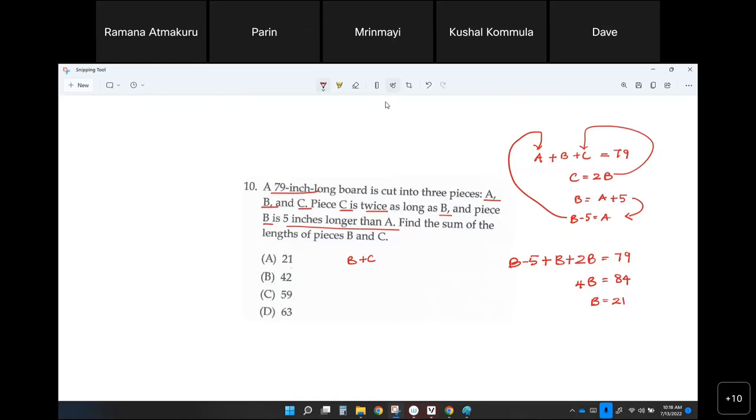Now B is 21. If you substitute B here, what is your C? Simply twice B, correct? Which means 2 times 21, which is 42. So your C is 42 and your B is 21, which is 63.